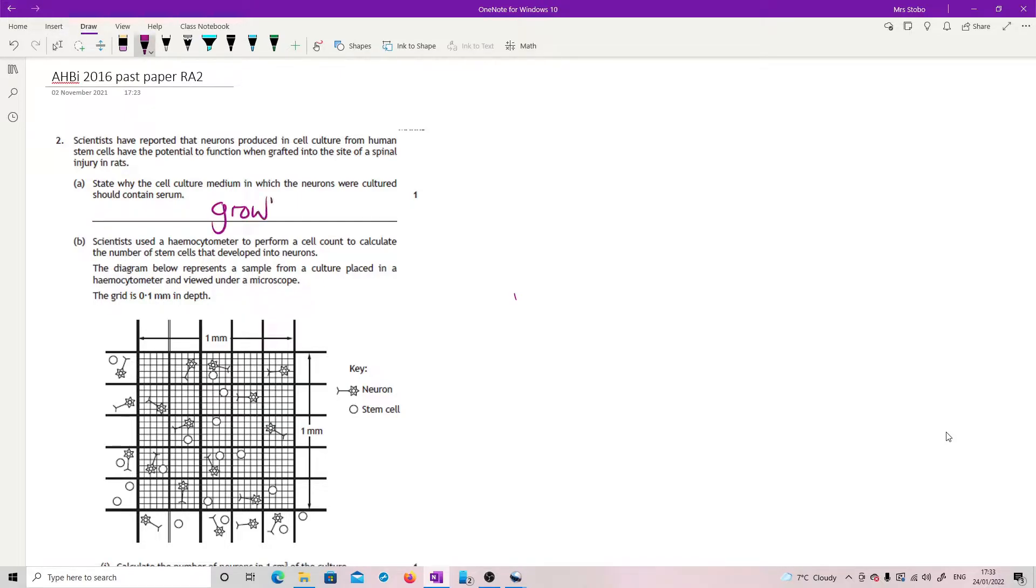State why the cell culture medium in which neurons were cultured should contain serum. Learn this one and put it in. Okay, serum contains growth factors which help cells. It's a little bit vague to say nutrition.